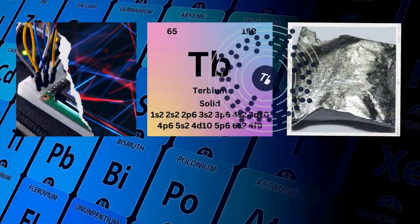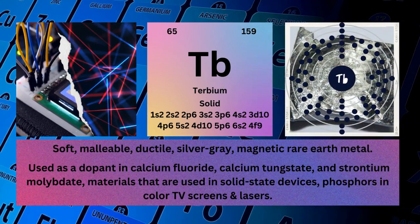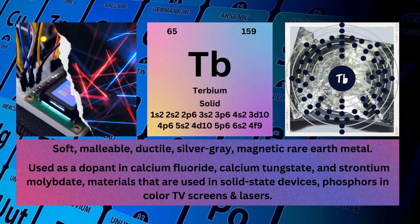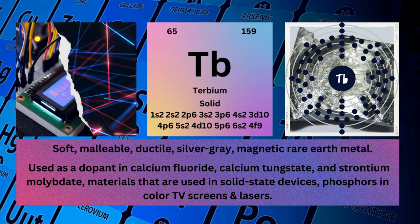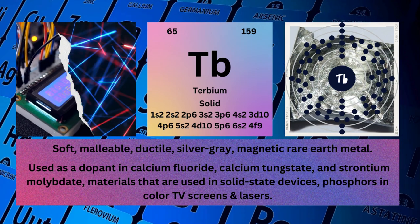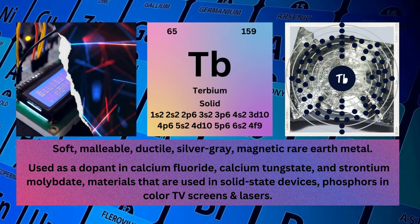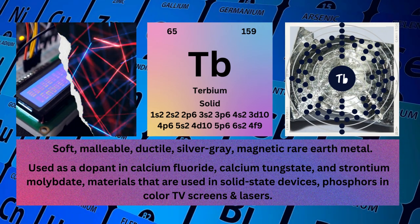Terbium. Atomic number: 65. Mass number: 159. Symbol: Tb. State: Solid.